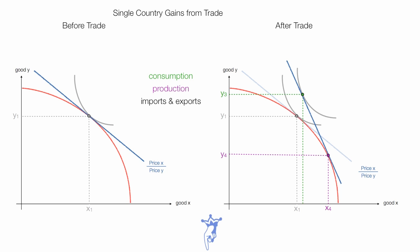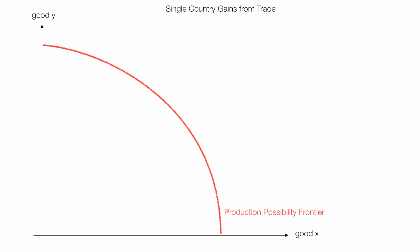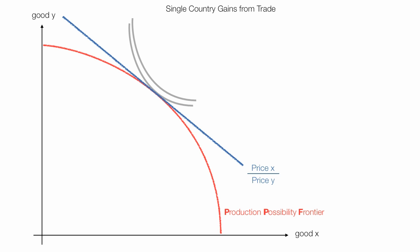You can find links to related playlists below. I will plot good Y on the Y-axis and good X on the X-axis. I'll draw in the country's production possibility frontier, or PPF. The blue line represents the ratio of price of good X to price of good Y. These gray lines are community or country indifference curves — I will label those as CI: CI1, CI2, and I will draw in a third indifference curve eventually called CI3.